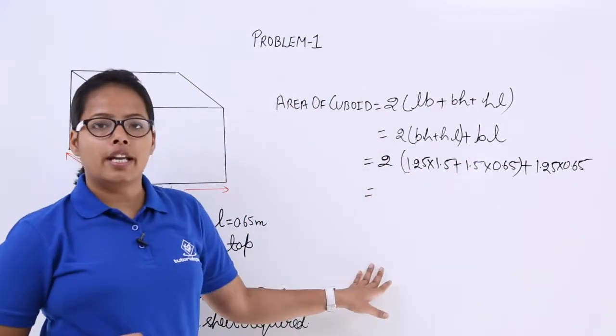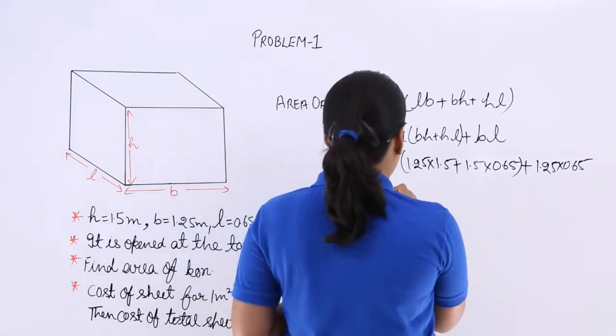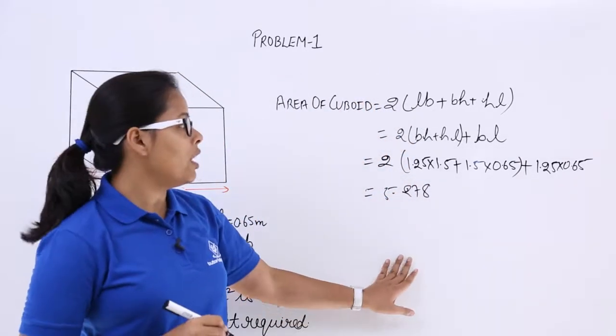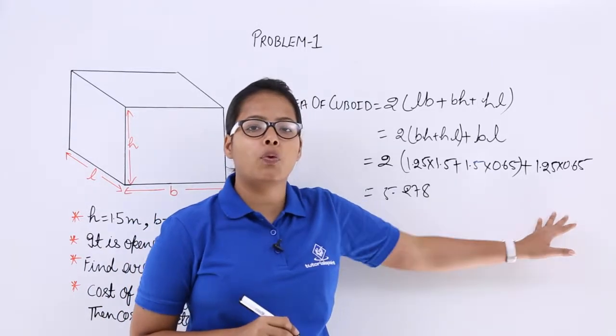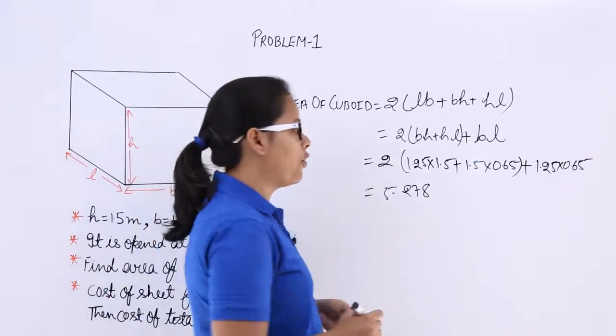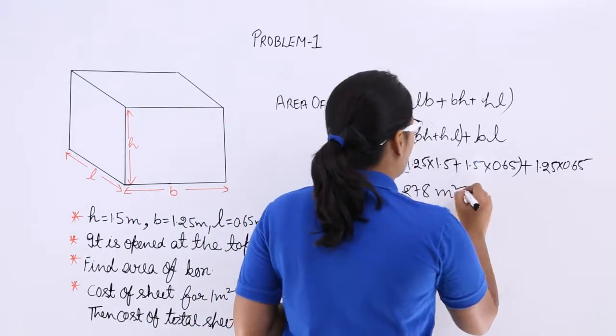What you will get? You will get 5.278. When you multiply this expression, you will get 5.278 as the area of this cuboid.